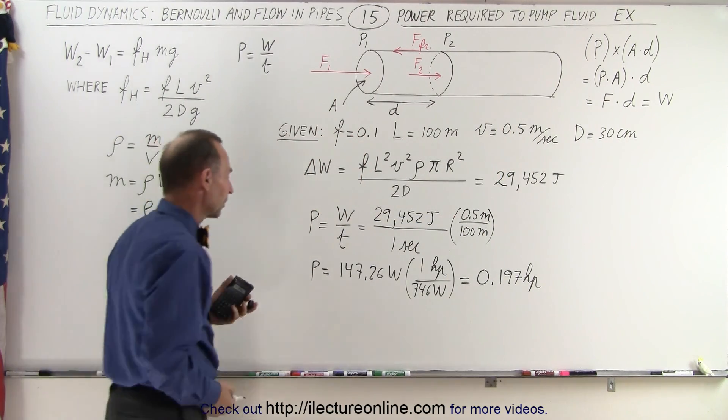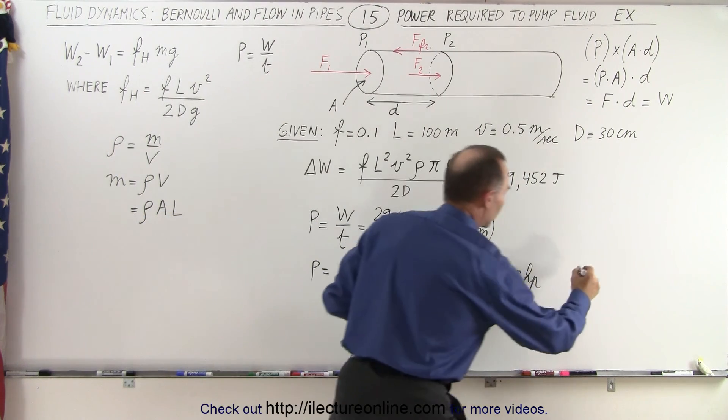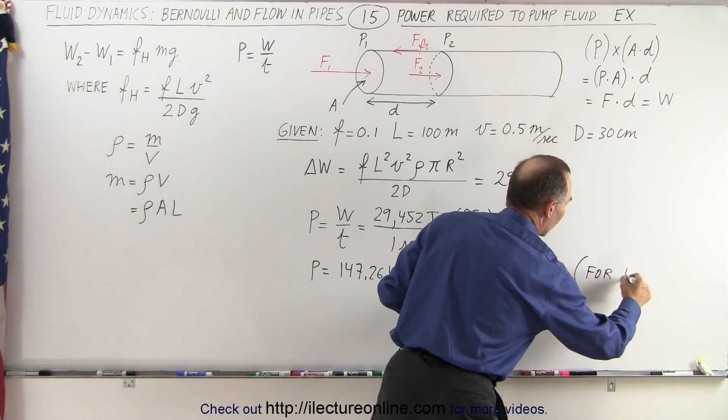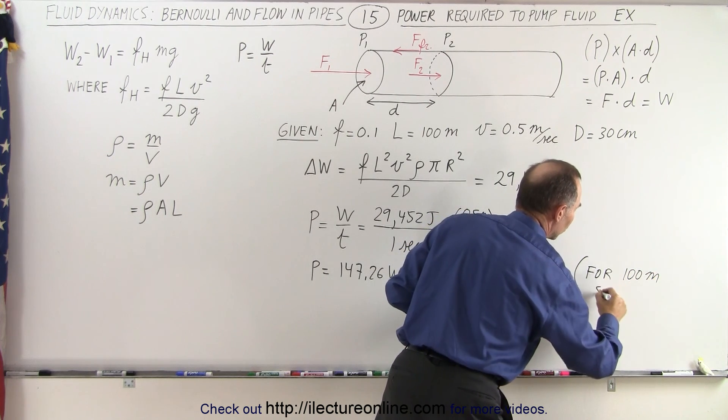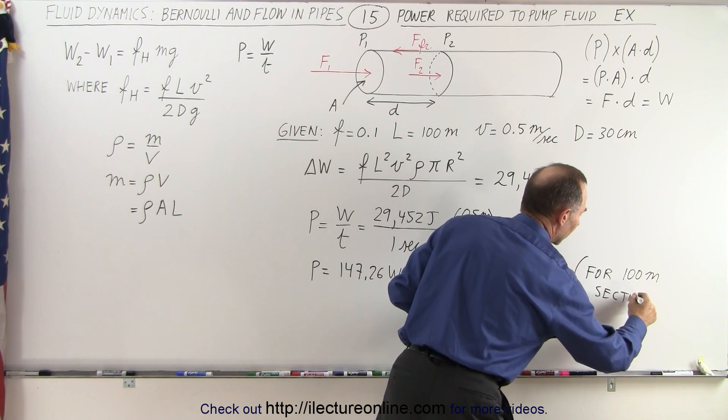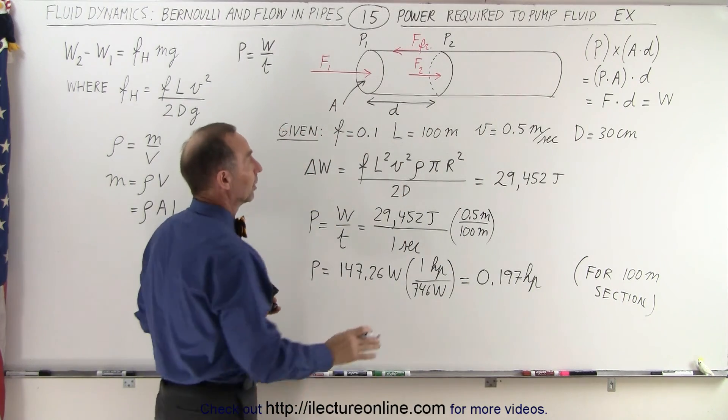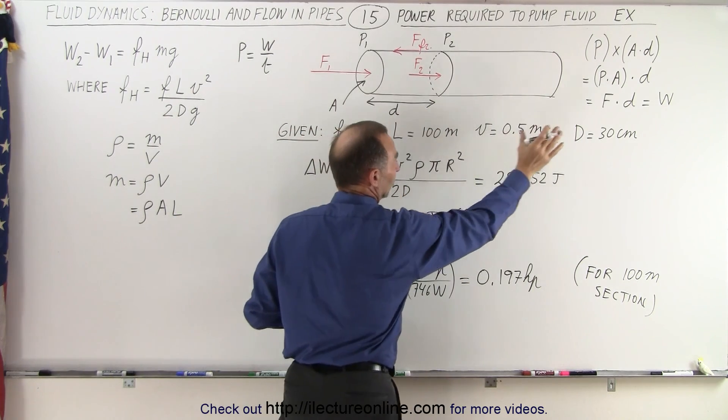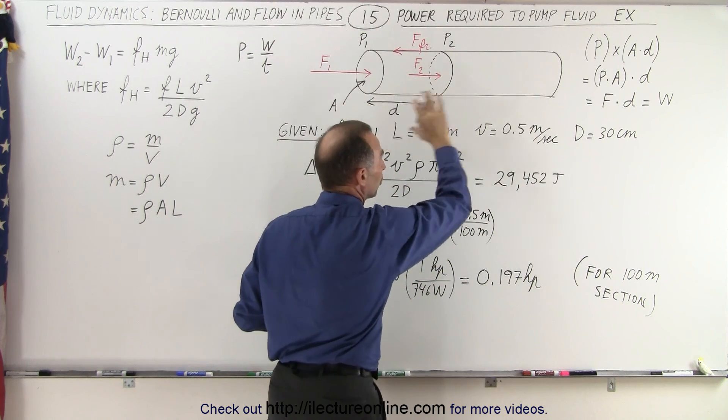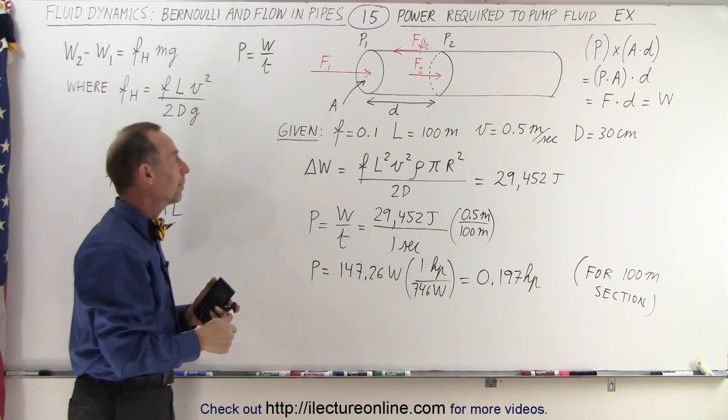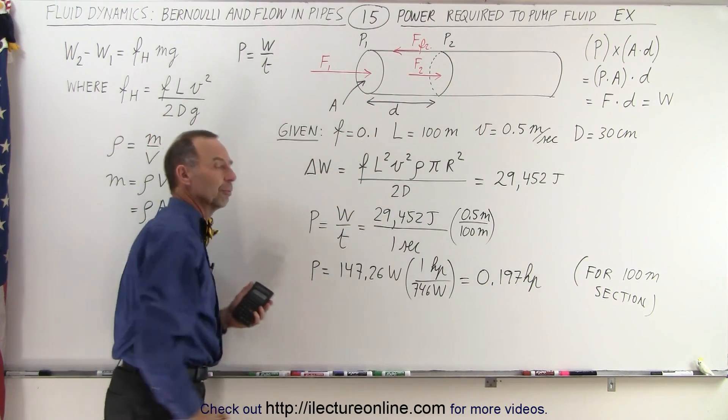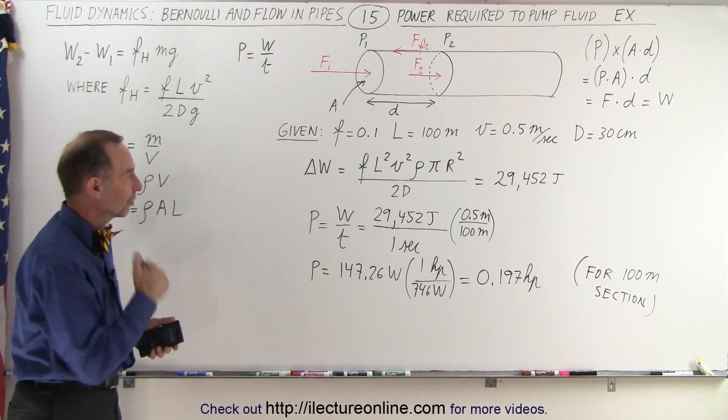This would be the amount of power required for a 100-meter section of the pipe, under the circumstances where we have a velocity of 0.5 meters, a diameter of 30 centimeters, and we're moving water through that pipe having a frictional fraction of 0.1.